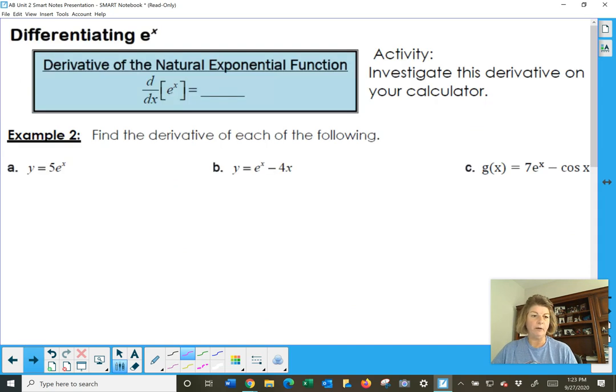We do the derivative of e first. The derivative of e to the x is e to the x. It is itself. So that's kind of bizarre, and it's one of the, I think it's the only function that the derivative of e to the x of a function turns out to be itself. You could investigate this derivative on your calculator if you wish, but I'm going to keep going forward.